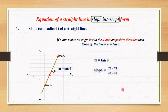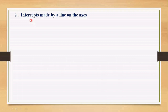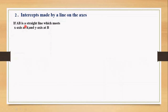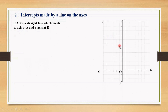Now let's define another term: intercept. Intercepts made by a line on the axis. Let AB be a straight line which meets the x-axis at A and the y-axis at B on the coordinate axis. Let this line meet x-axis at A and y-axis at B here.